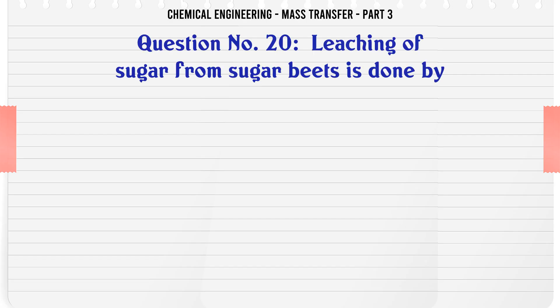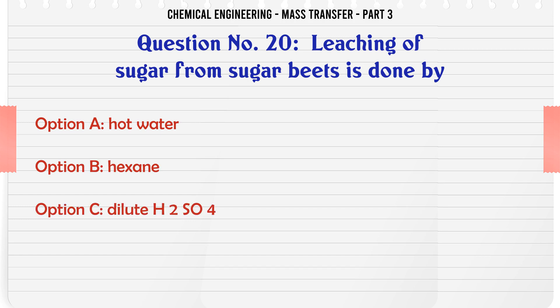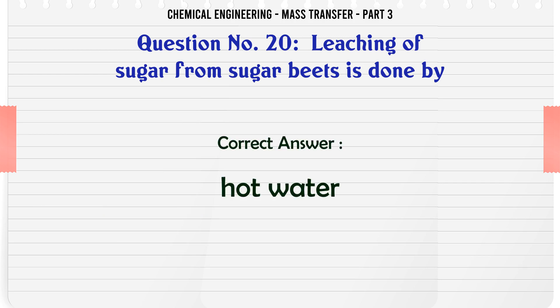Leaching of sugar from sugar beets is done by: A) hot water, B) hexane, C) dilute H2SO4, D) lime water. The correct answer is: hot water.